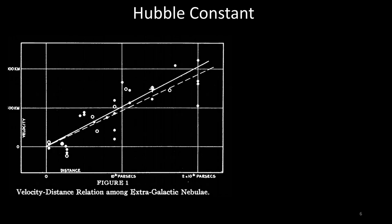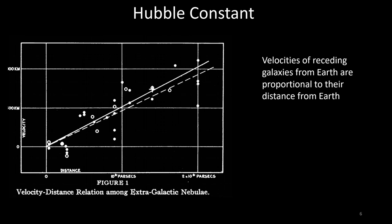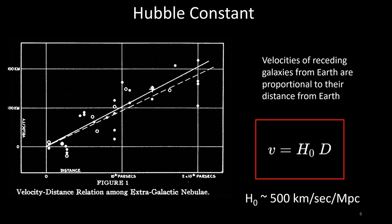Hubble plotted the velocities of receding galaxies versus their measured distance from the Earth, discovering that the velocities of galaxies receding away were proportional to their distance. The proportionality constant he arrived at is what we now call the Hubble constant. Hubble originally measured it to be approximately 500 kilometers per second per megaparsec. Today, the currently measured value is closer to about 70 km/s/Mpc, meaning that for every megaparsec — approximately 3.18 million light years — an object is farther away, it moves away from us at an additional 70 km/s.